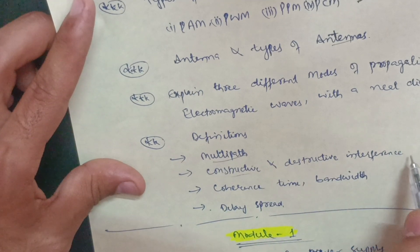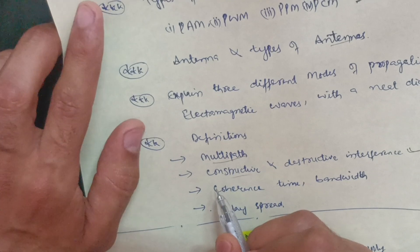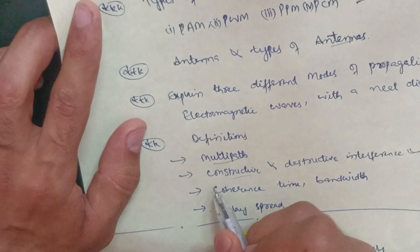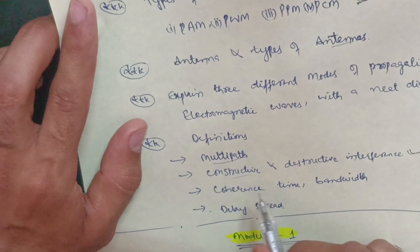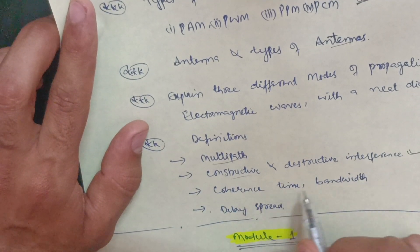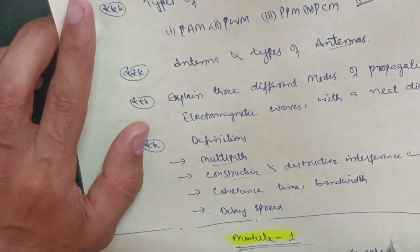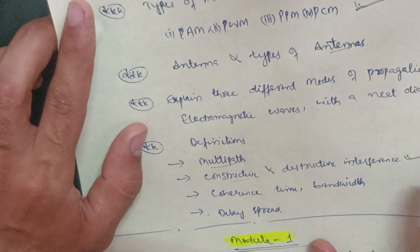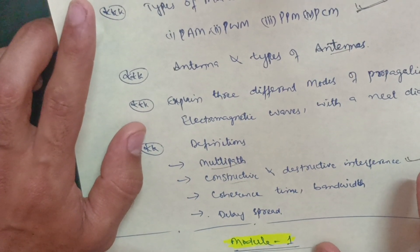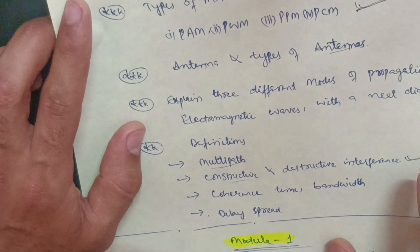You should also cover some definitions: multipath, constructive and destructive interference — which is a physics topic and relatively easier, so just have a conceptual understanding — coherence time, bandwidth, and delay spread. These are the passing modules in which you have to go fully.